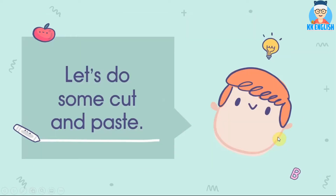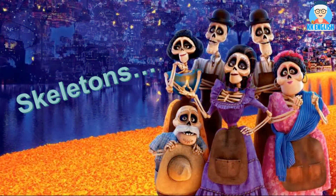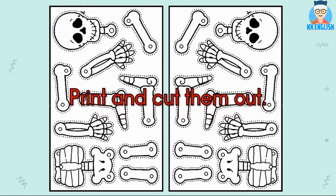Let's do some cut and paste. Are you ready? Let's prepare your scissors and glue. Skeleton — have you watched the movie Coco? Let's check out what the skeletons look like. Oh, this is the parts of the bones. You may print them out and cut them out.